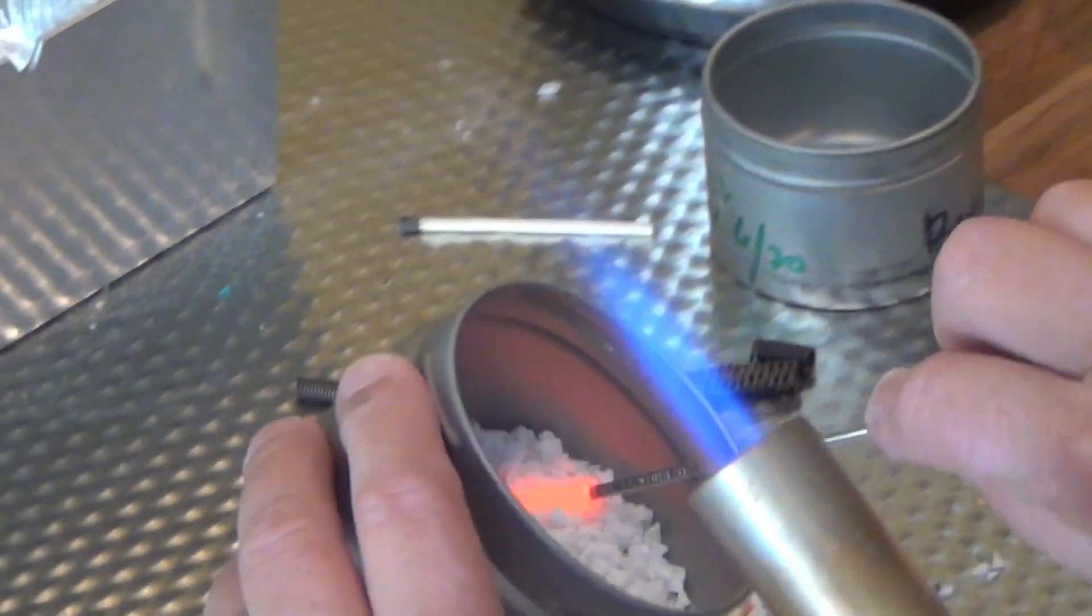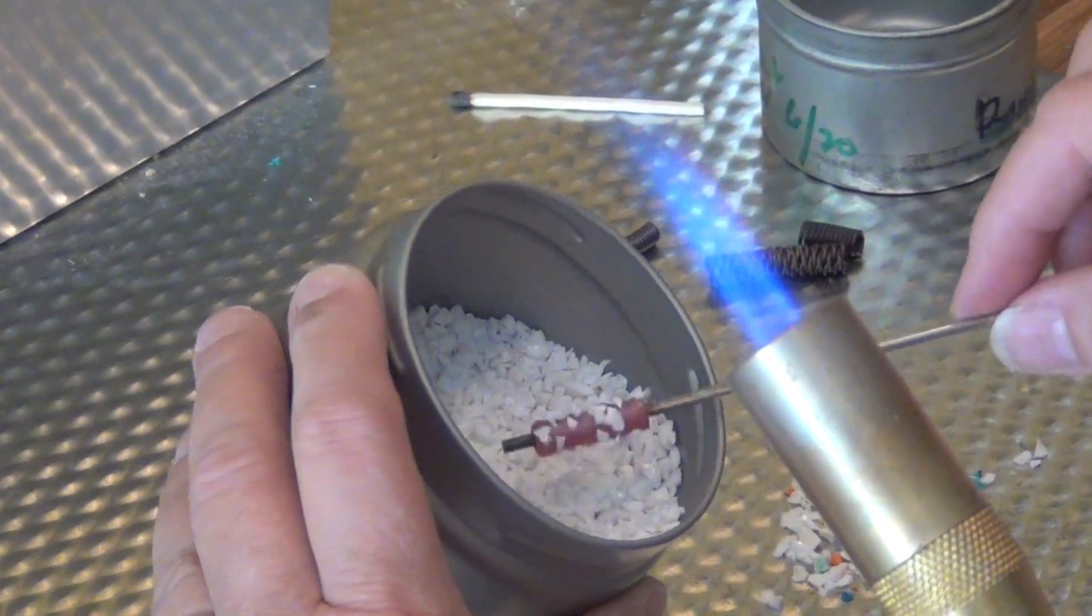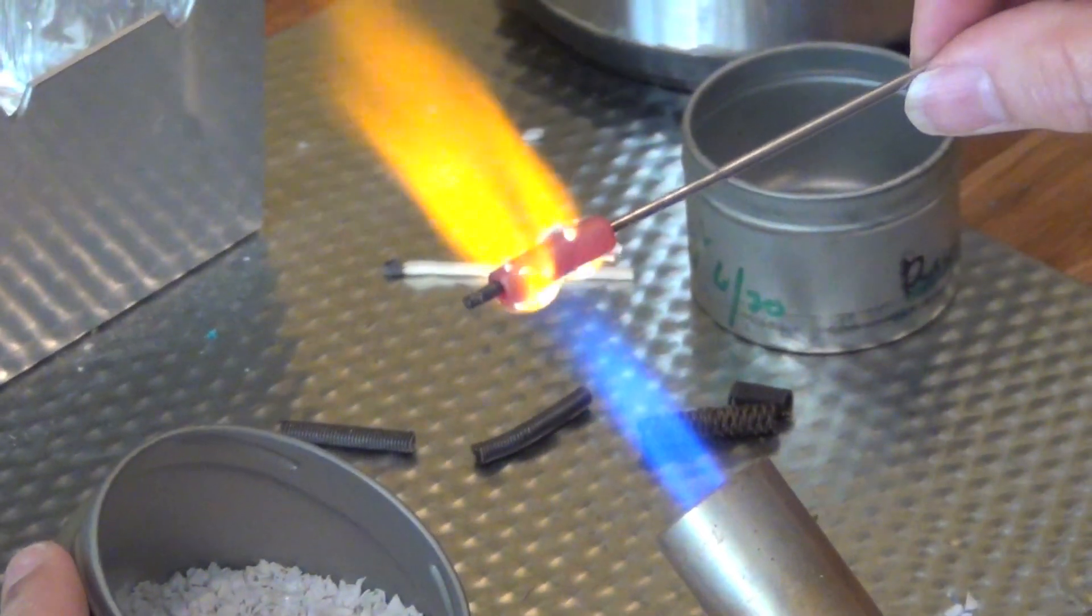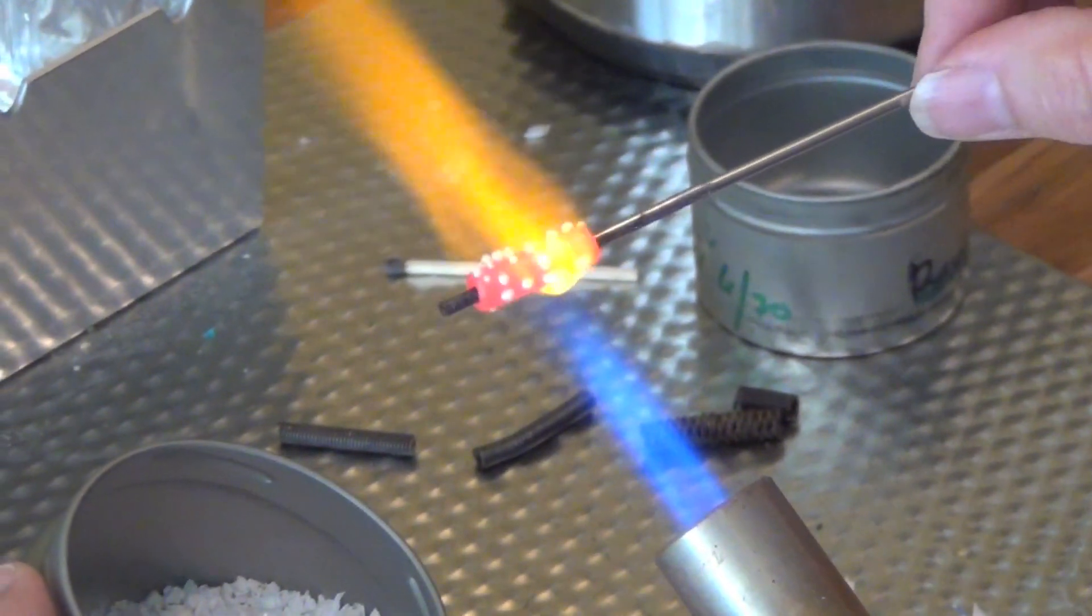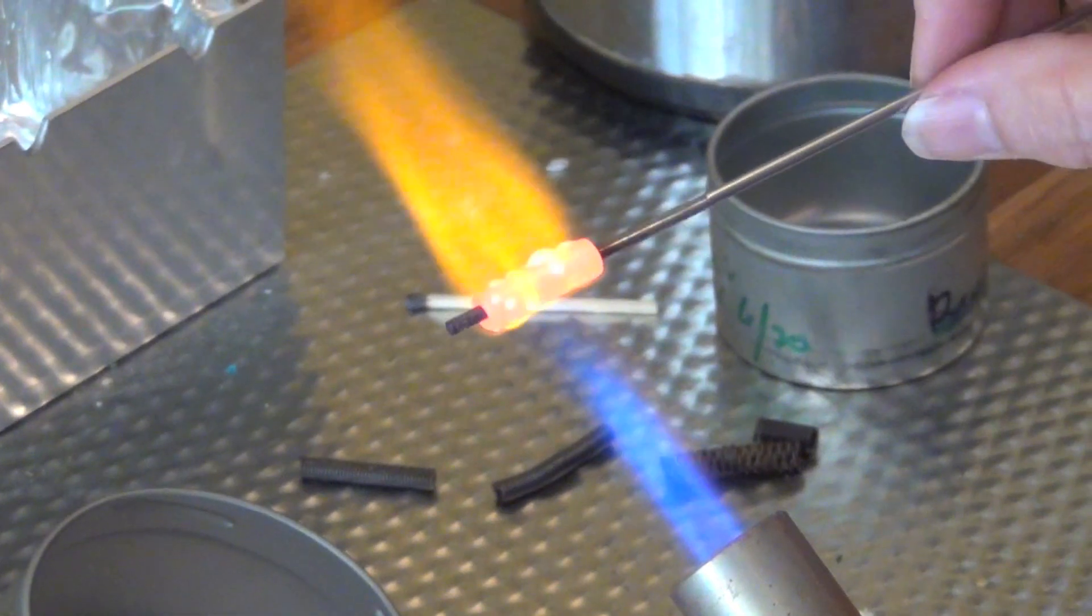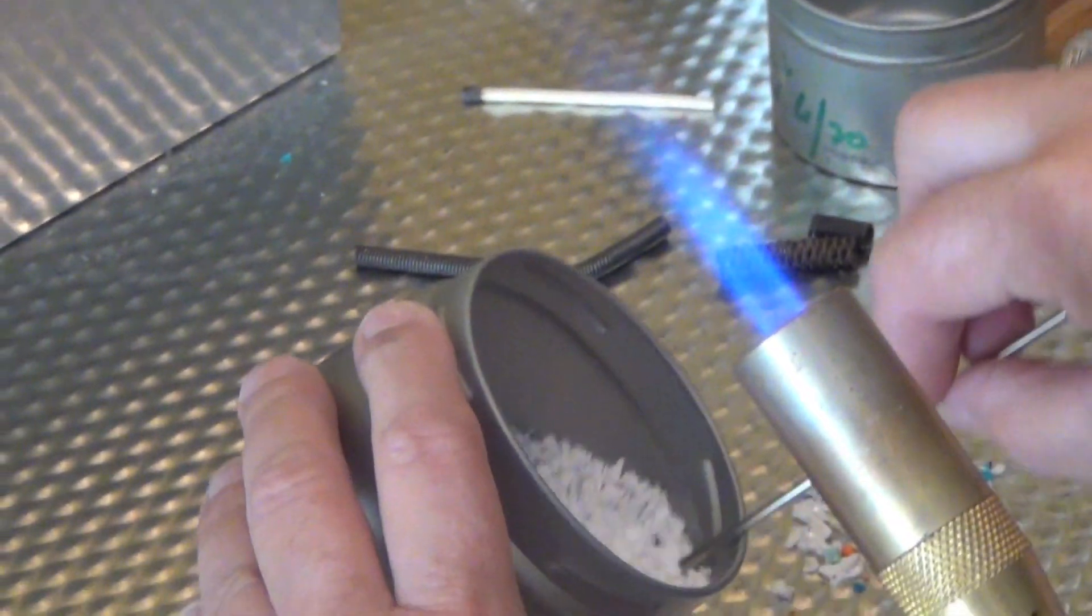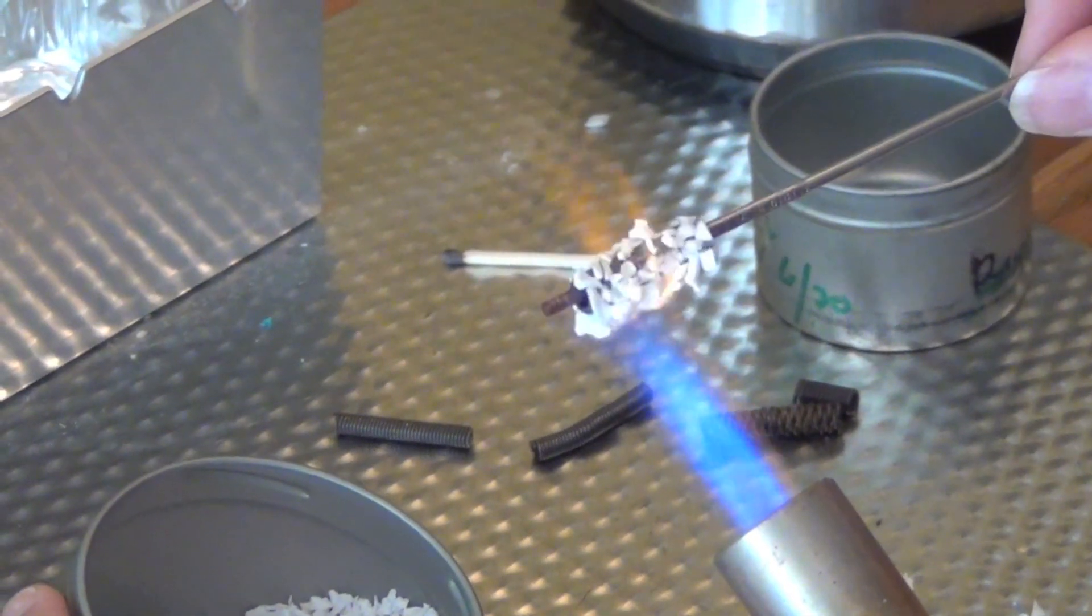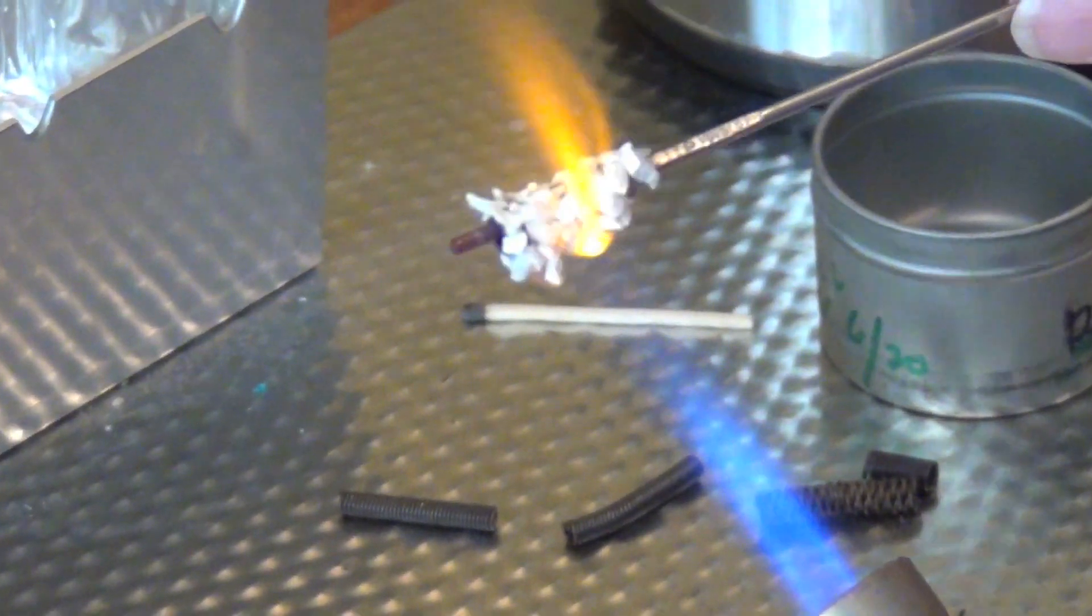So 620 refers to the mesh size. That means all of the grains will fit through mesh with six holes in a linear inch, but none of it will go through a mesh that has 20 holes in a linear inch. We're just heating this up right now and waiting for it to smooth out and become our glass bead.